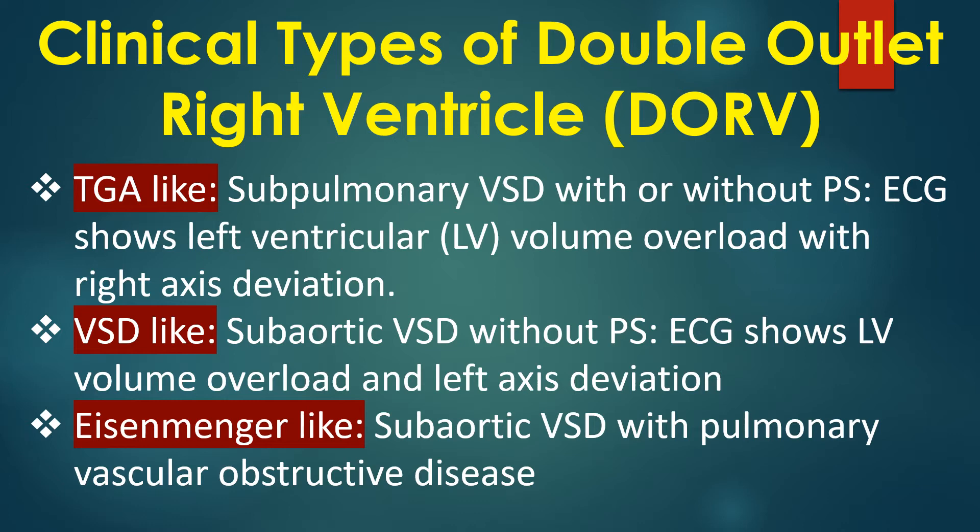The VSD-like type has a subaortic VSD without pulmonary stenosis, and ECG shows LV volume overload and left axis deviation. The Eisenmenger-like type has a subaortic VSD with pulmonary vascular obstructive disease.